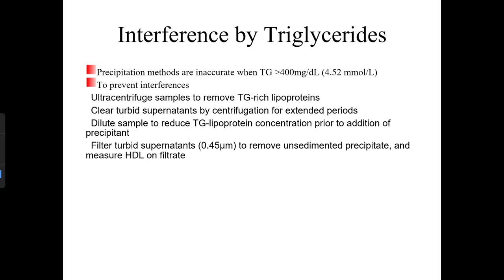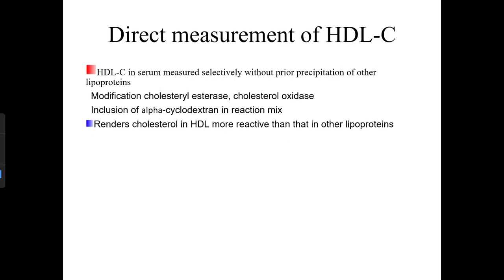Important note: if triglycerides are greater than 400 mg/dL, triglycerides will interfere with all other lipid testing. In that case, the sample must be ultra-centrifuged to remove triglycerides before evaluating other lipids. Direct measurement of HDL-C uses selective measurement in serum without prior precipitation, employing cholesterol esterase/cholesterol oxidase with alpha-cyclodextrin inclusion.